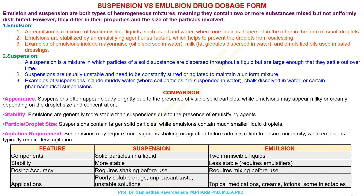Emulsion. An emulsion is a mixture of two immiscible liquids, such as oil and water, where one liquid is dispersed in the other in the form of small droplets. Emulsions are stabilized by an emulsifying agent or surfactant, which helps to prevent the droplets from coalescing.